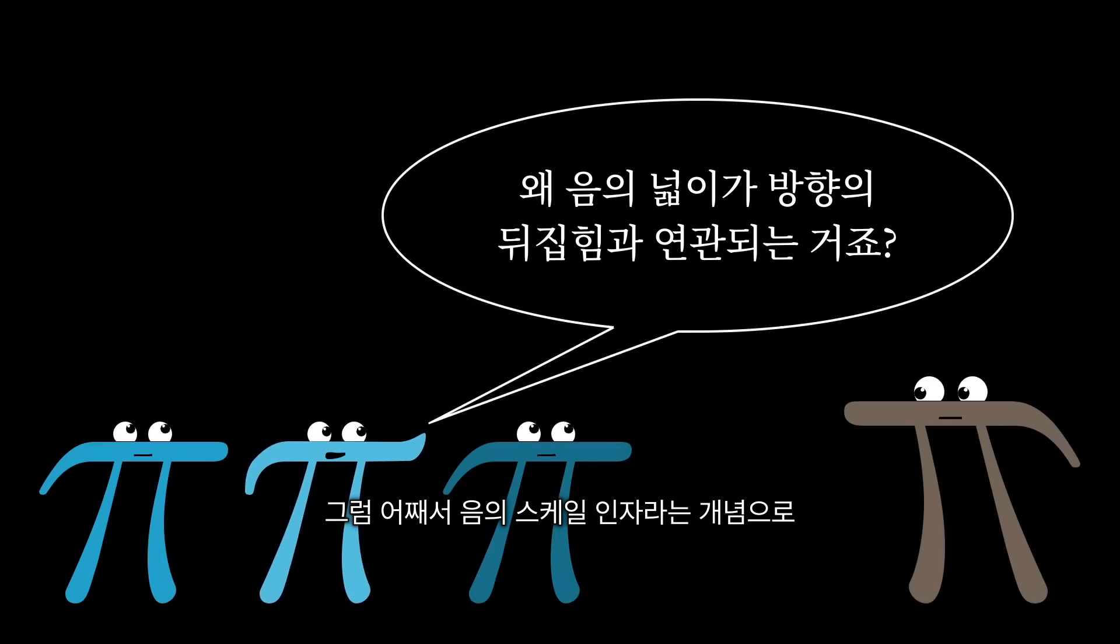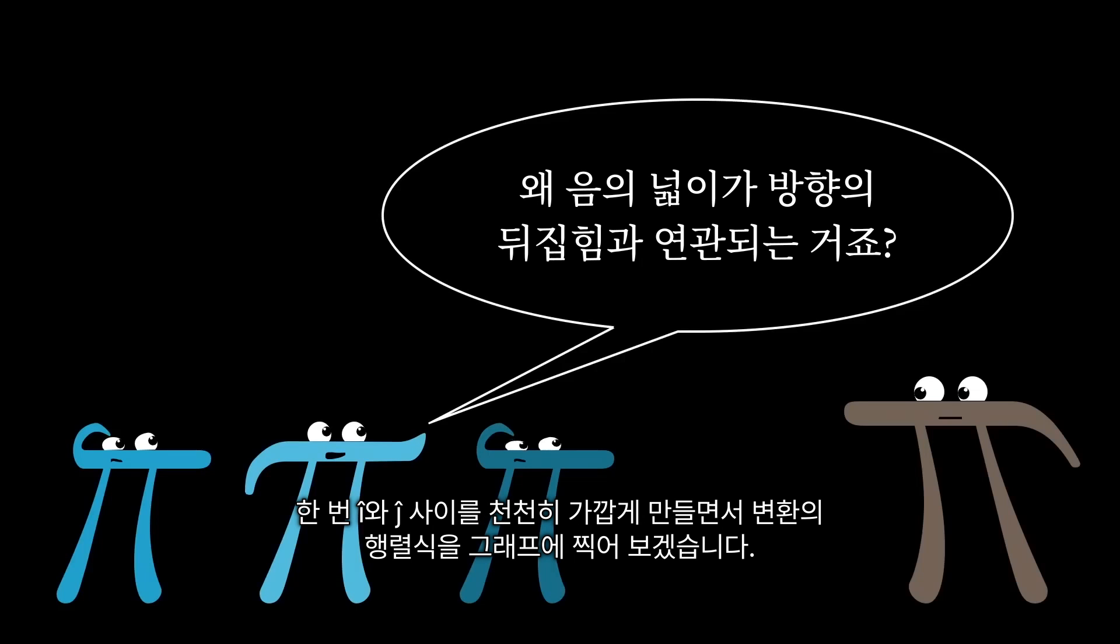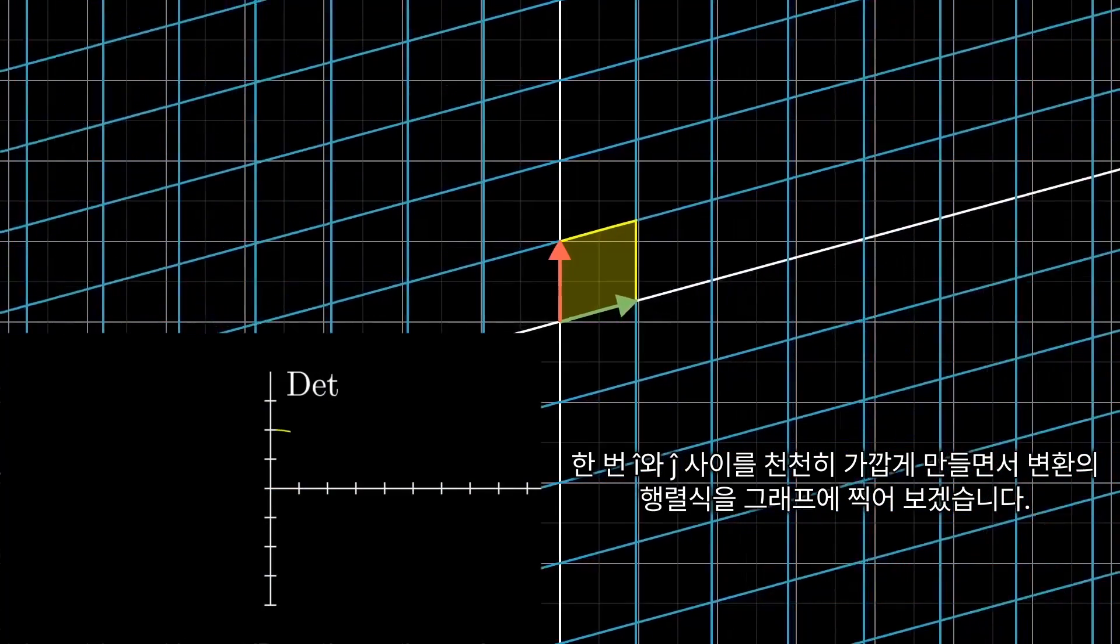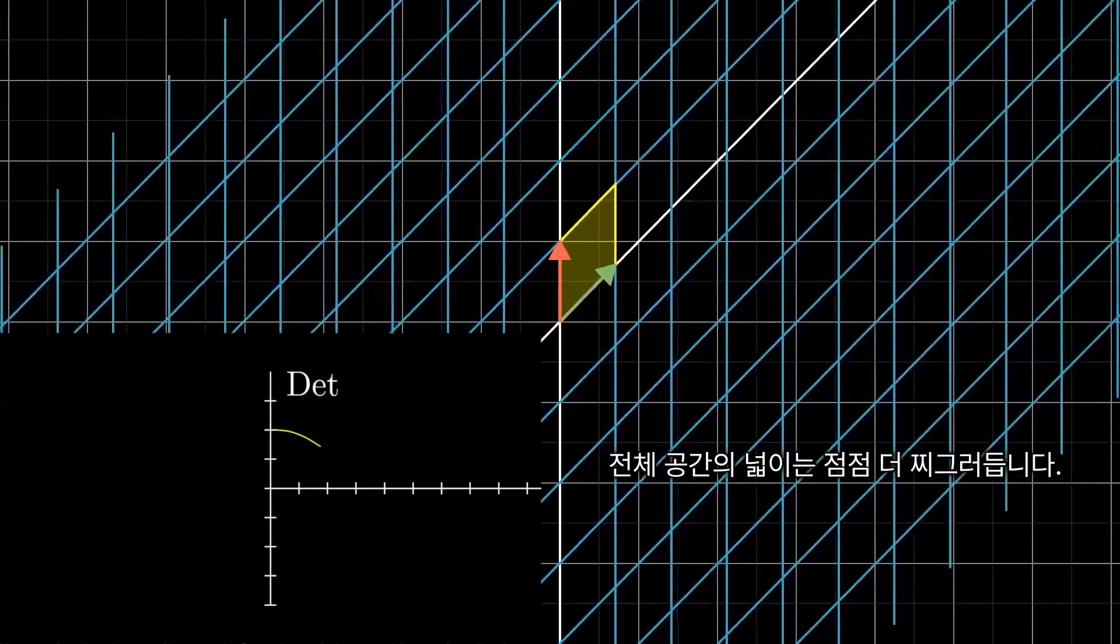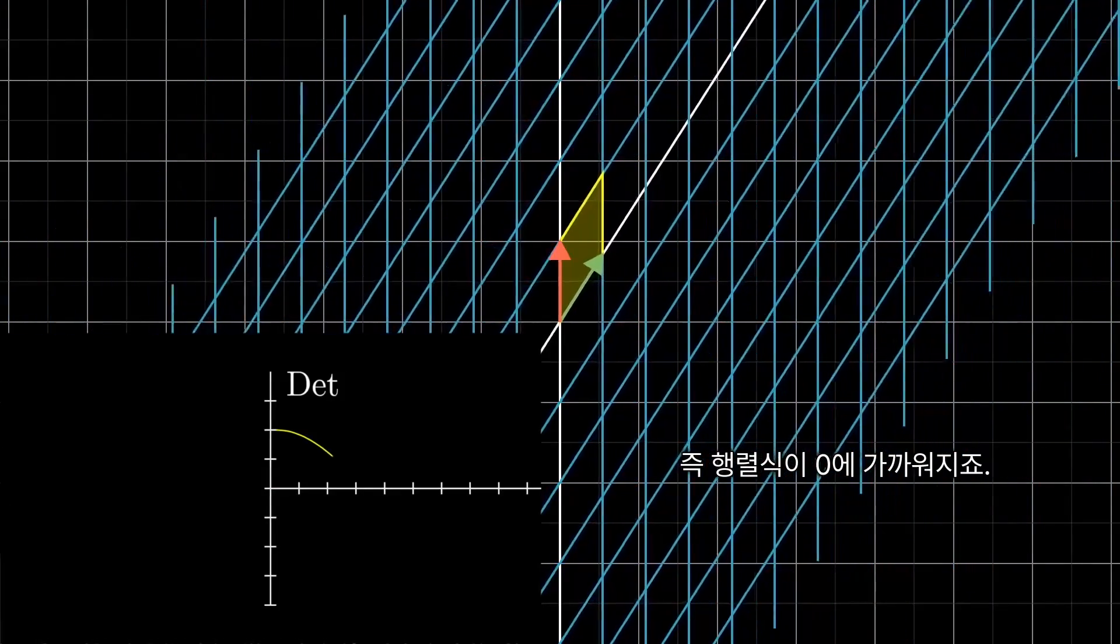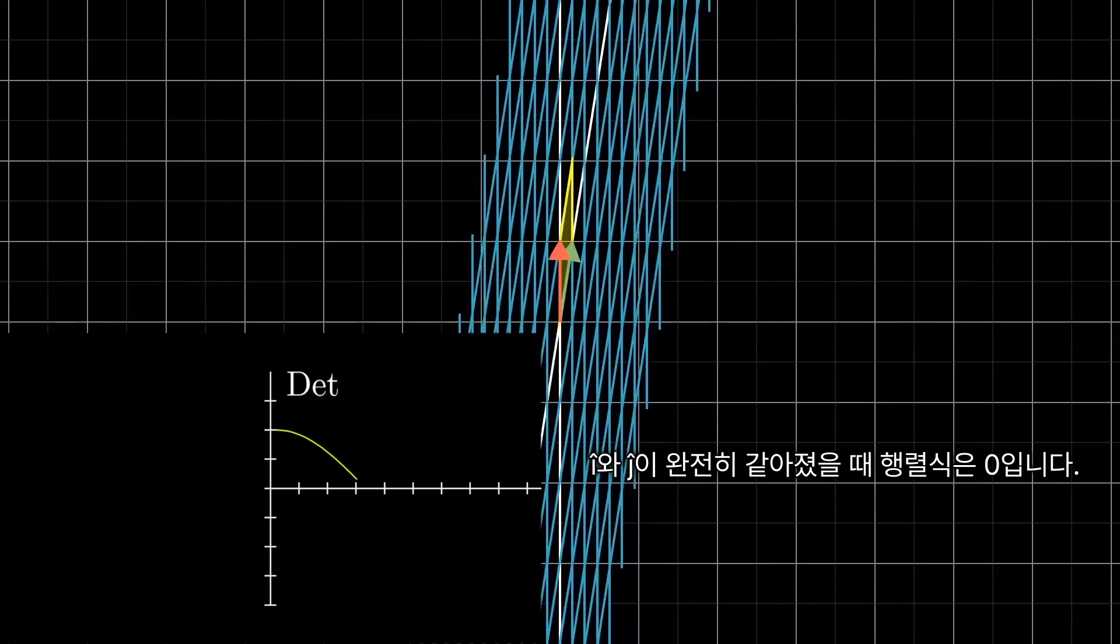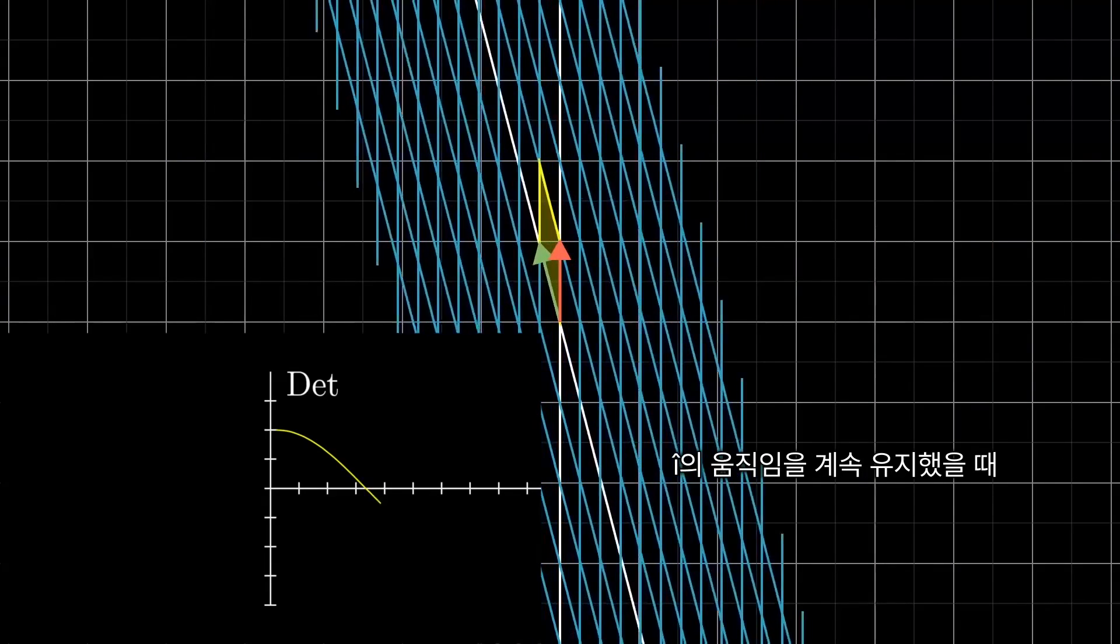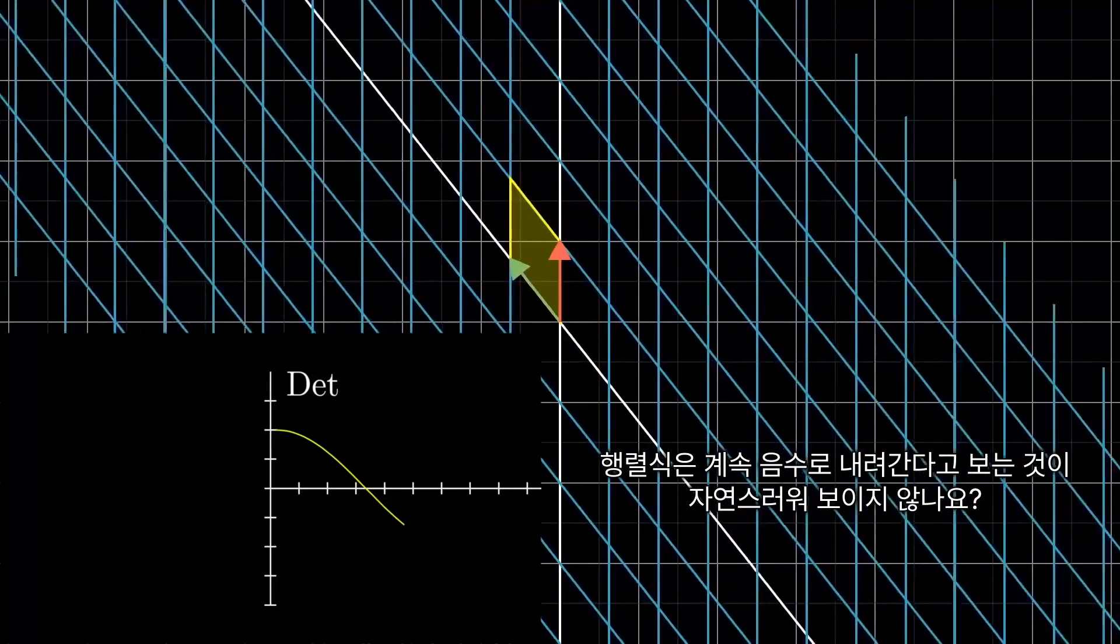So why would this idea of a negative area scaling factor be a natural way to describe orientation flipping? Think about the series of transformations you get by slowly letting i-hat get closer and closer to j-hat. As i-hat gets closer, all of the areas in space are getting squished more and more, meaning the determinant approaches zero. Once i-hat lines up perfectly with j-hat, the determinant is zero. Then, if i-hat continues the way that it was going, doesn't it kind of feel natural for the determinant to keep decreasing into the negative numbers?